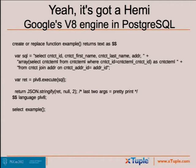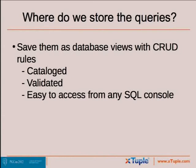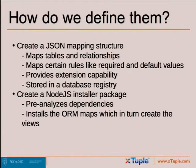Now we've got a way to get objects in the format we need out of Postgres. The next question is: where do we put these queries? We still have to do the data mapping. We're saving those queries in the database with views that have CRUD rules. The nice thing about storing them as views is they're cataloged and validated, and they're easy to access from any SQL console. We define them with a JSON mapping structure that maps tables and relationships and rules like required and default values. They can be extended and are stored in a database registry.